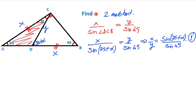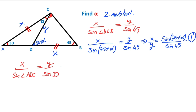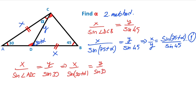And then for this triangle, let's apply one more sine rule: X over sine angle ADC equals Y over sine 30. We can write sine(30 + alpha) instead of sine angle ADC, because sines of supplementary angles are equal. That gives X over sine(30 + alpha) equals Y over sine 30 — meaning X over Y equals sine(30 + alpha) over sine 30. This is the second equation.